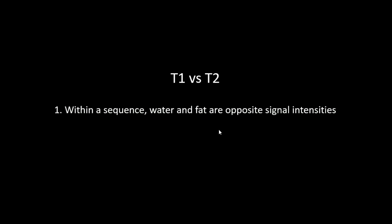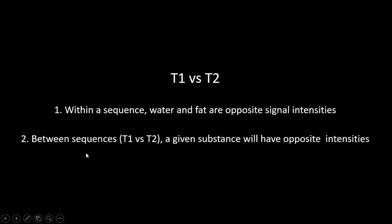Let's start with T1 versus T2. These are very similar sequences and people get tripped up a lot with them. Between T1 and T2, there are two basic rules. Number one, within a given sequence — take T1 for example — water and fat are opposite signal intensities. Number two, between sequences, T1 versus T2, a given substance — take fat for example — will have opposite signal intensities. This will make sense in a minute.